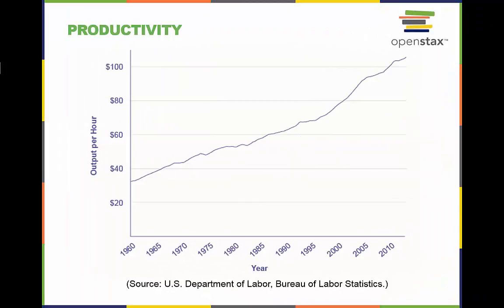Output per hour worked is a measure of worker productivity. In the U.S. economy, worker productivity rose more quickly in the 1960s and mid-1990s compared with the 1970s and 1980s. However, these growth rate differences are only a few percentage points per year — look carefully to see them in the changing slope of the line. The average U.S. worker produced nearly $150 per hour in 2012.